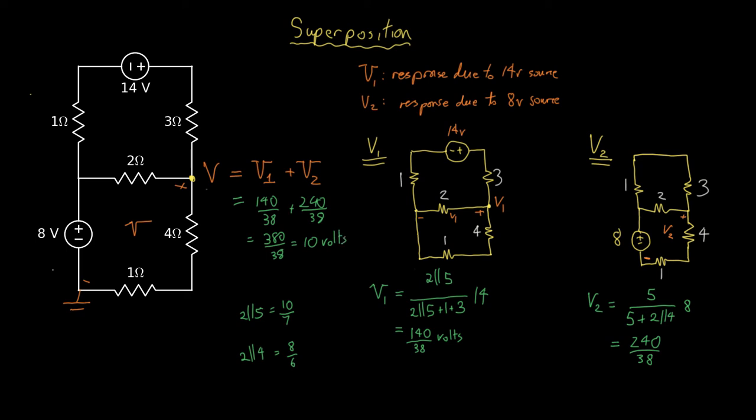At that point, we can solve for the other quantities. That current must be 2 amps, because we have a 10 volt voltage across 5 ohms. That current is, the voltage difference is 2 volts, so that difference, that current has to be 1. That means that that current has to be 3.